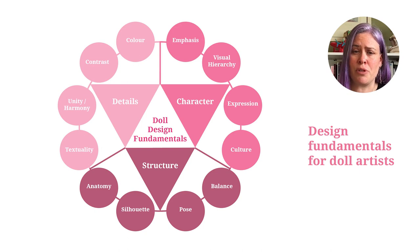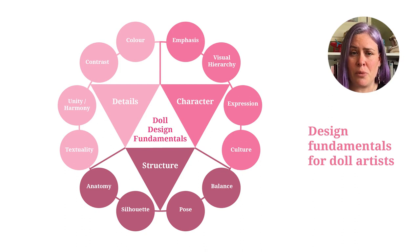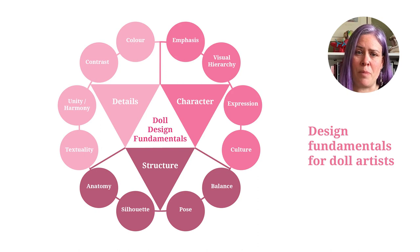Here is a quick overview of the 12 steps in the design fundamentals for doll artists. Under structure, we start with anatomy, which is a literal understanding of the bone and muscle structure of the doll. This is also relevant for more abstract dolls, but is more easily summed up in the second principle silhouette, which explores the overall shape of the doll against the negative space of the background. Next comes pose, which looks at dynamic line of action, movement, and dynamism of the doll. This is combined with balance, which looks at the symmetry and asymmetry of the figure, and considers the balance of not just the doll, but its relationship to its base and its props.